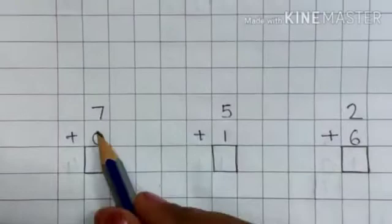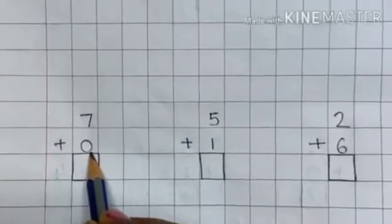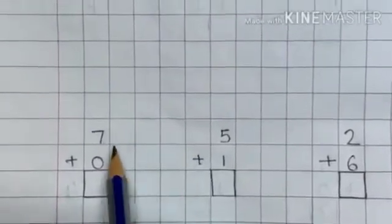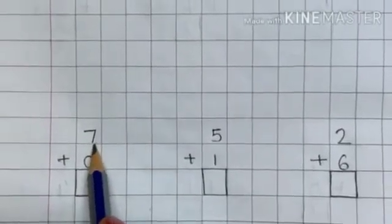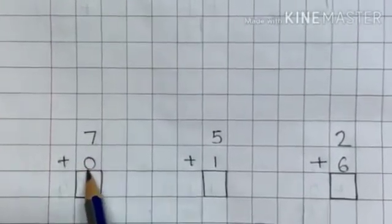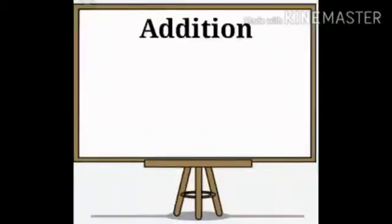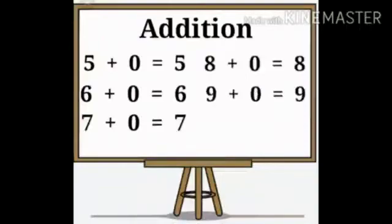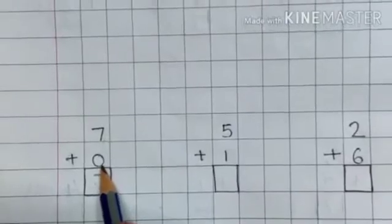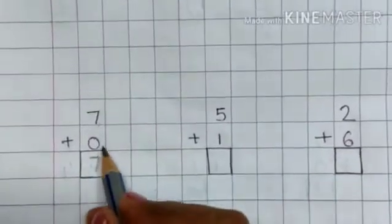Next, over here we have number seven plus zero. Zero means nothing — zero has no value. That means whatever number we are adding with zero, it will remain the same. So seven plus zero equals seven. Just like five plus zero is five, six plus zero is six, eight plus zero is eight, nine plus zero is nine, and so on. The number we add with zero will always remain the same — it will never increase the value.